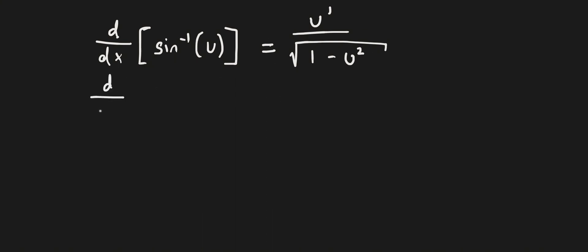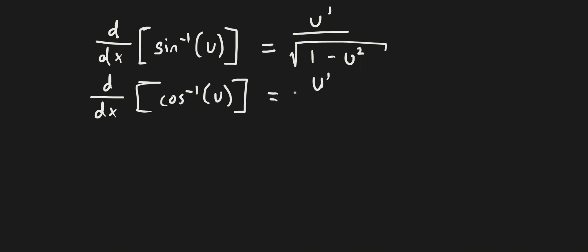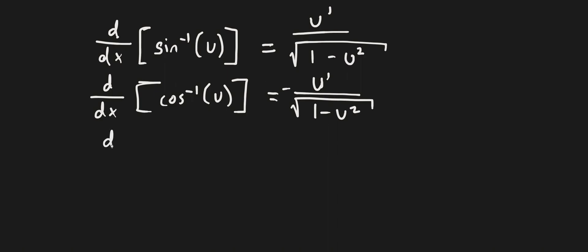For cosine inverse of u, you're just going to have u prime on top — it's the same thing as sine, except you add a negative in front. Remember, the c's will have negatives. This applies for the derivatives of inverse trig functions and regular trig functions.